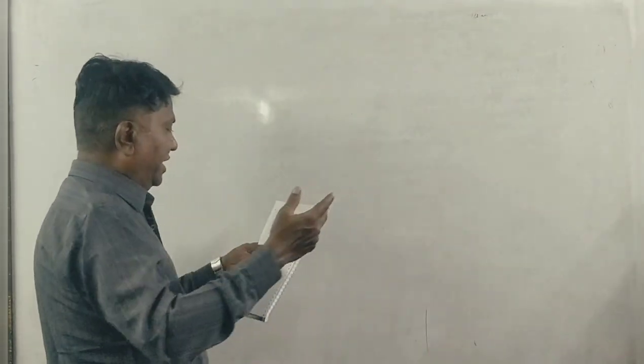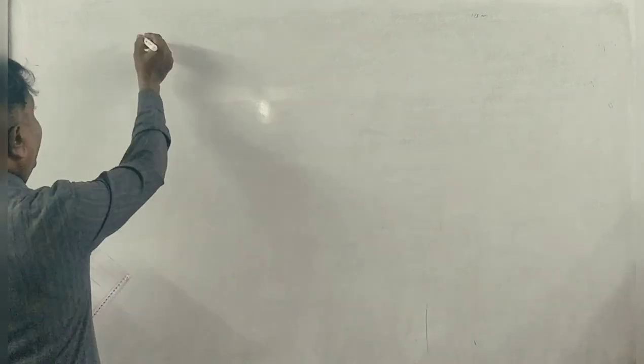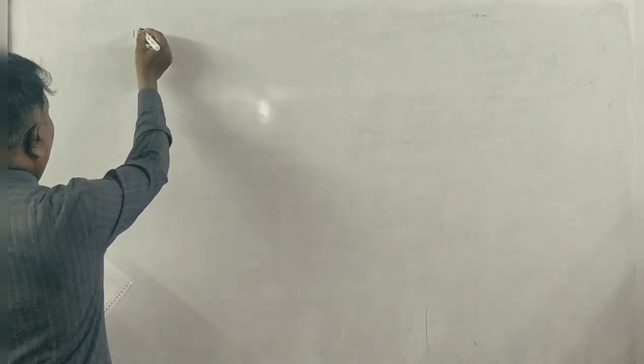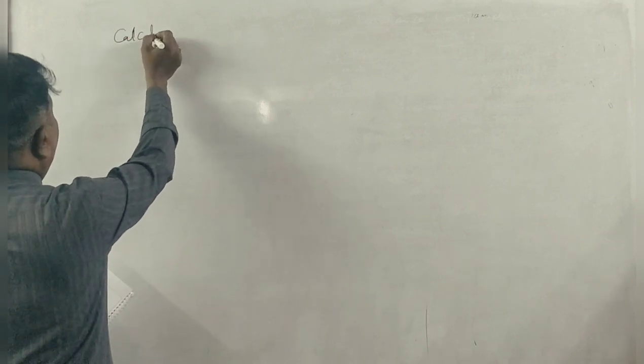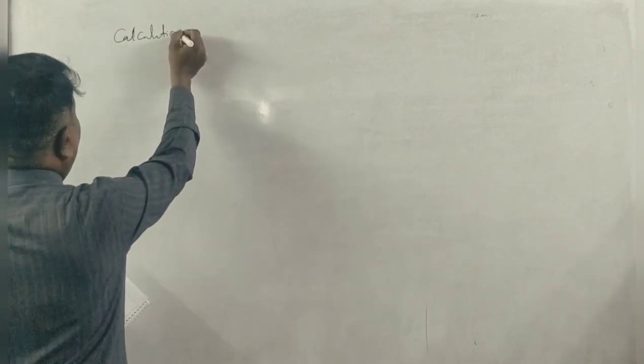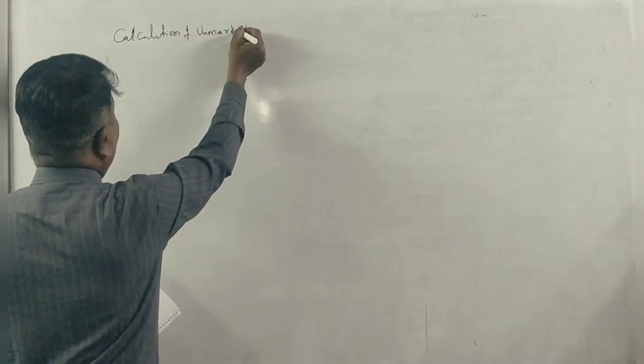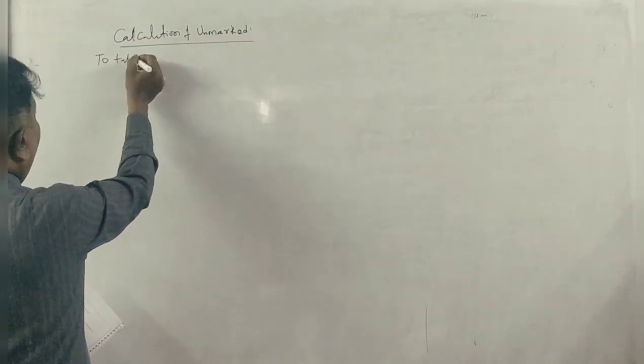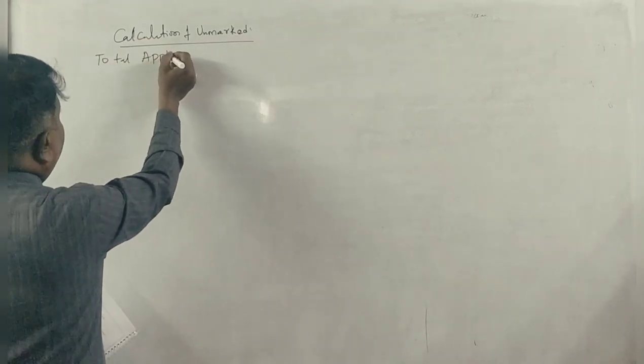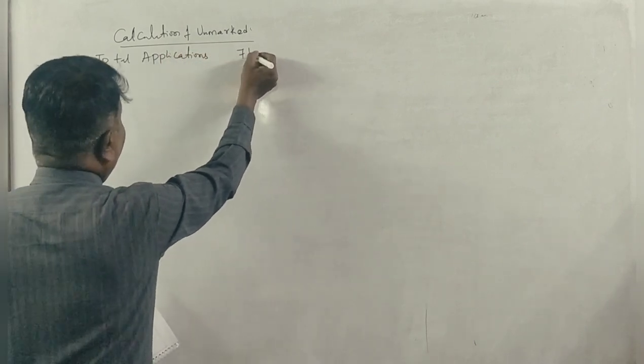We have the important part of X, Y, Z. First, we have the total applications and the calculation of unmarked applications. Unmarked applications. We have the total applications, so what is it? 71,000.